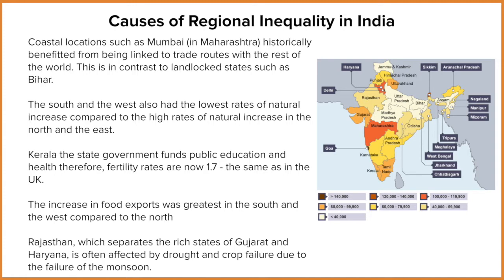Some other factors to consider: the west and the south actually have some of the lowest natural increases, meaning fewer babies are being born, so the population increase is not going to be as large. This links quite nicely with GDP — if we've got fewer people in those locations, we can spread the available resources more evenly across those who do live there.